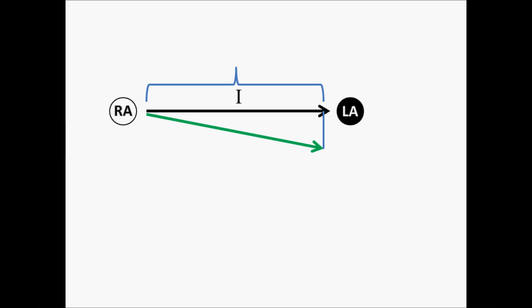And so in this case, lead one would be a good lead to see the activity going in this direction. But if we had a different vector going in this direction, lead one would not be such a good lead, because as you can see, only this portion is going to be captured by that lead. We'd have to switch to a different lead to see this vector a little more clearly. It would generate a smaller amplitude wave than the previous one.